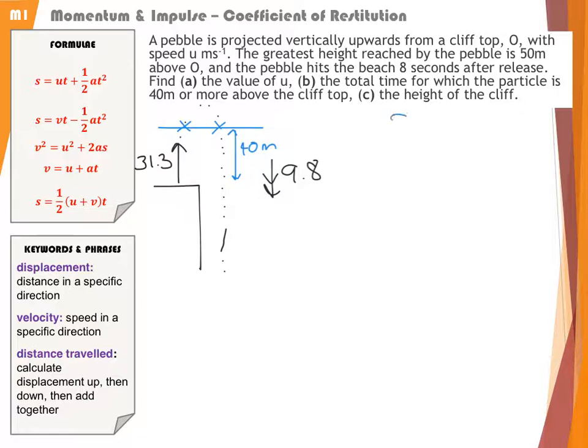Looking for when the displacement is 40, taking up as positive. S = 40, initial speed is 31.3, velocity isn't 0 because it's not at the top, A = -9.8, and time is what I'm trying to find. With S, U, A, and T, that's going to be this formula here.